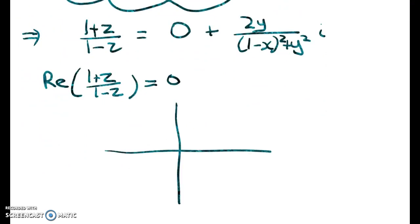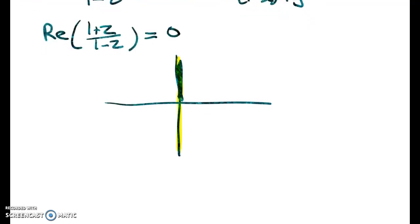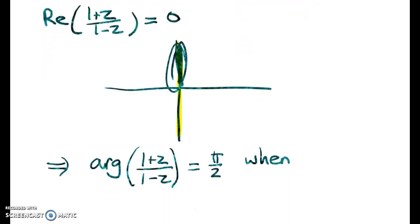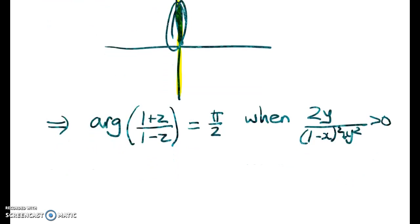Graphically, that means that (1+z)/(1-z) is up here or down here. So the argument of (1+z)/(1-z) is equal to π/2 when we're up here. So that's when 2y over that. Right, when will that happen?